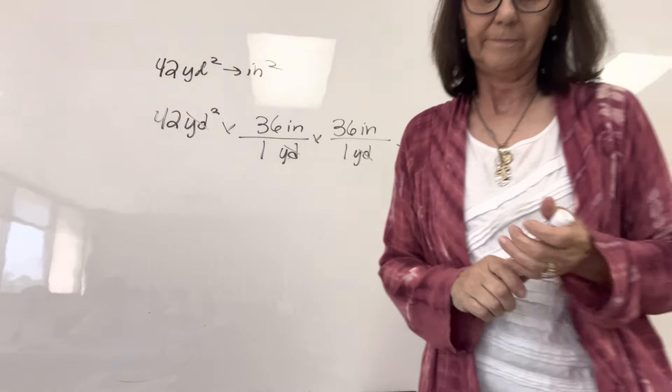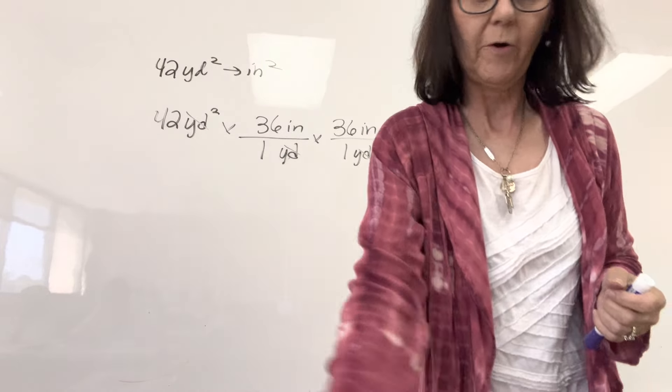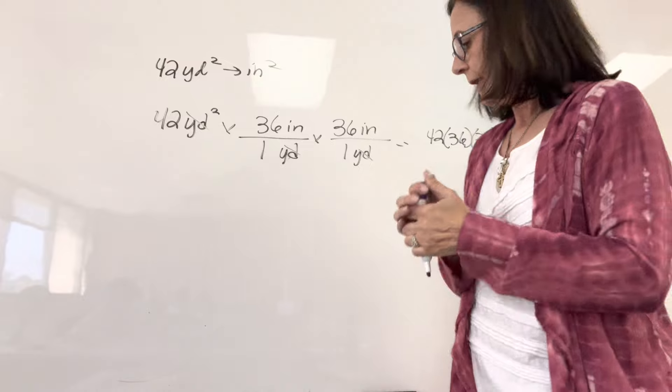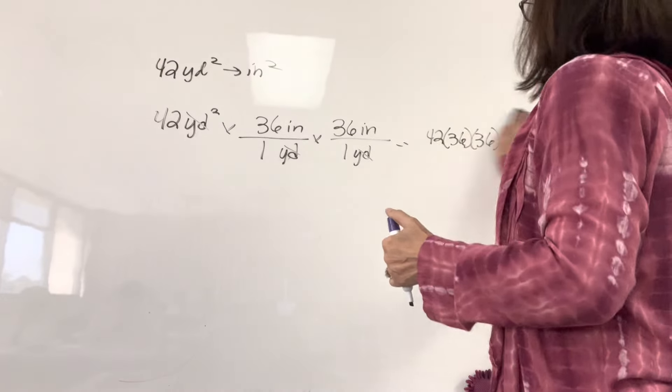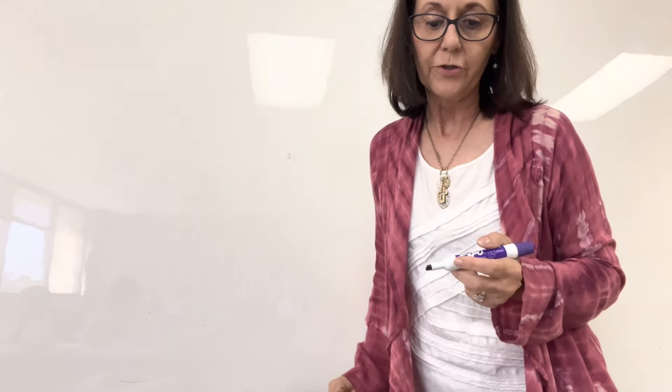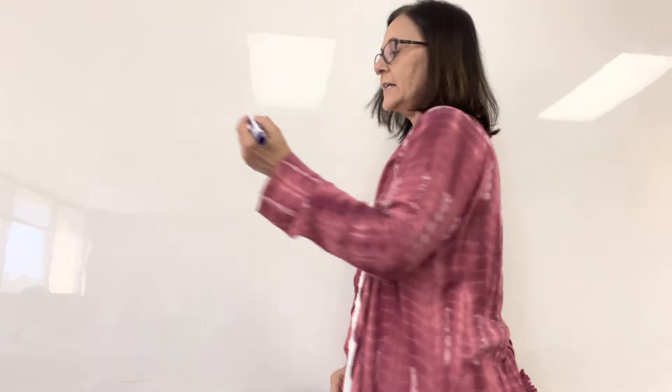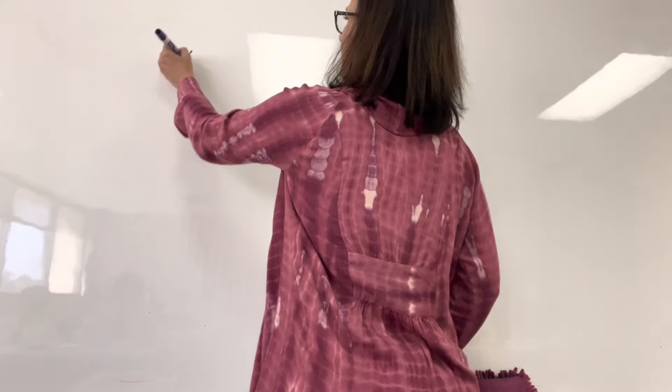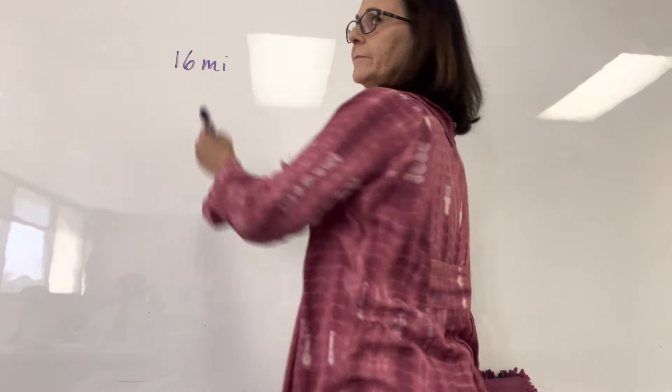Okay. Look at example, the last one, 41.4. Now we're going to multiply, we're going to use unit multipliers to convert 16 cubic miles. How is that different? Yep. It's just three. It's cubed.